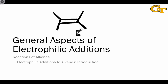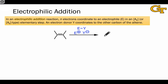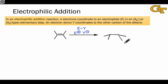Having identified the pi electrons in an alkene as a potential nucleophile, we can now discuss general aspects of electrophilic additions for which this type of electron flow is key. An electrophilic addition reaction is naturally an addition reaction. The elements of the reagent, here EY, are incorporated into the atoms of the organic substrate or starting material.